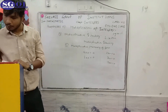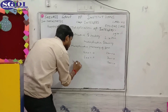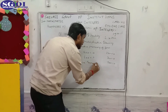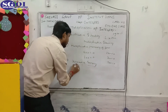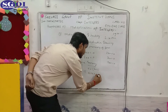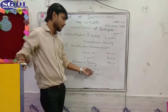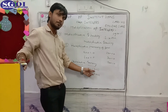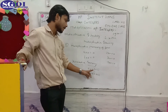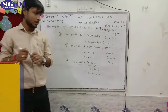The next is the distributive property of multiplication over addition. Suppose you write a × (b + c). You can distribute it like this: a × b + a × c. So if there is a × (b + c), then b is multiplied by a and c is multiplied by a. This is called the distributive property of multiplication.